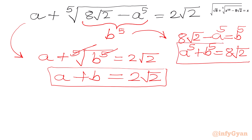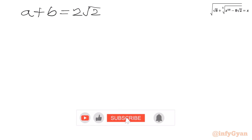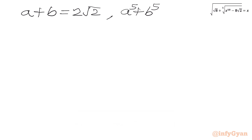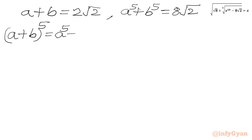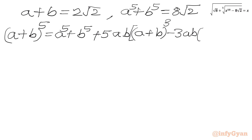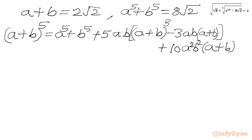Now we have to solve this system of equations for A and B. Our two equations are: A + B = 2√2, and A^5 + B^5 = 8√2. I will write the expansion of (A + B)^5: it equals A^5 + B^5 + 5AB(A³ + B³) + 10A²B²(A + B), where A³ + B³ = (A + B)³ − 3AB(A + B).